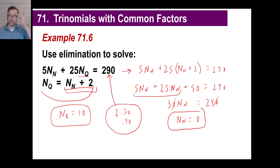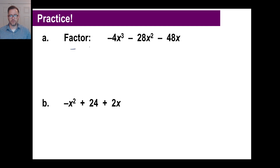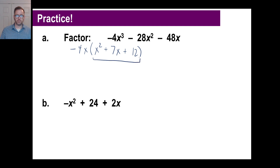Let's work through practice problem A. We want the first term with the highest exponent to be positive, so we factor out negative 4x. When we divide negative by negative we get positive x², negative divided by negative is positive 7x, and negative 48 divided by negative 4 is positive 12. Now focusing on x² + 7x + 12: I need two numbers that multiply to give 12 and add to give 7. Those are 4 and 3. So the answer is negative 4x times (x + 4)(x + 3).